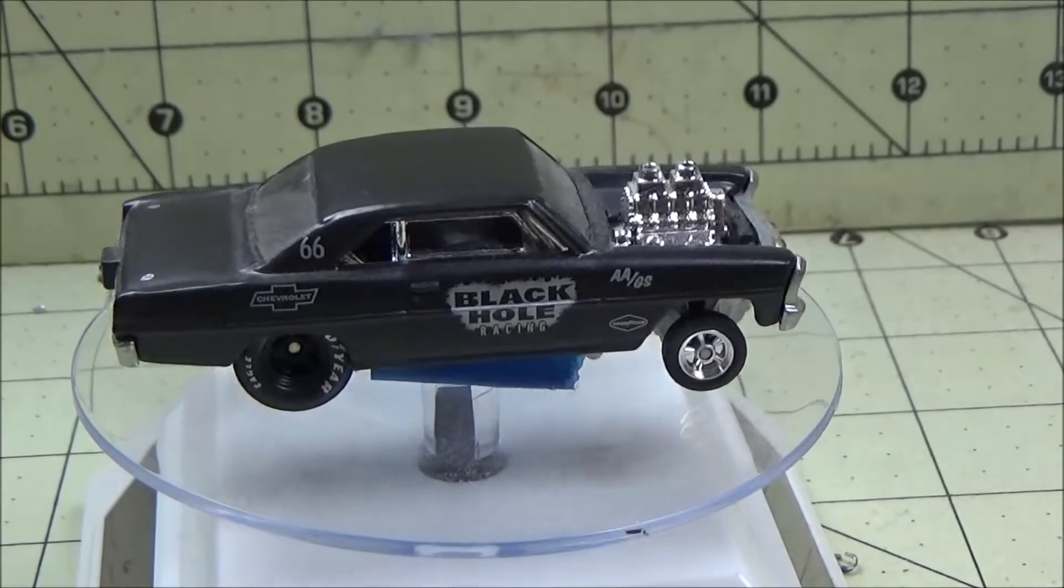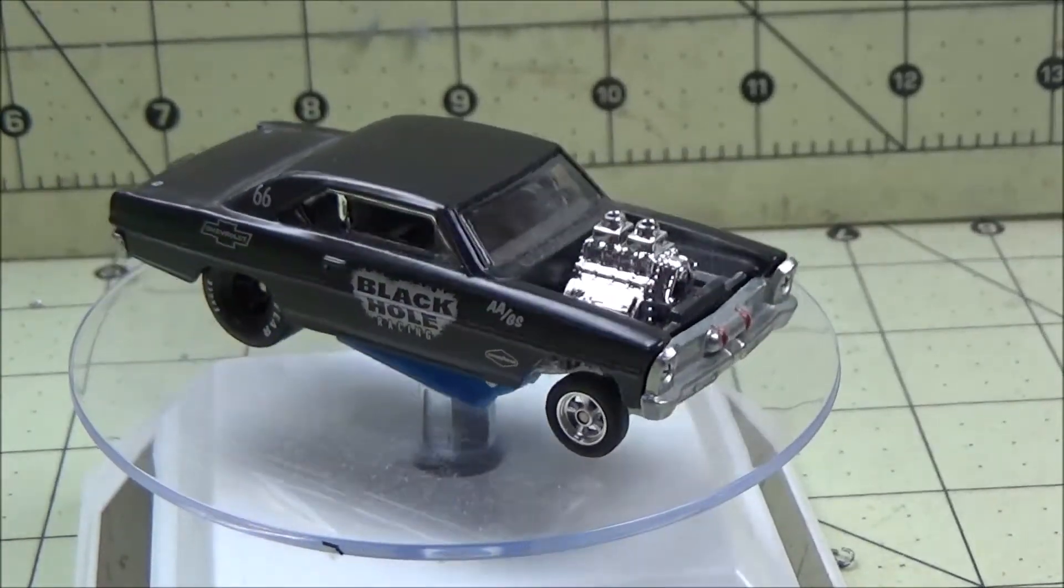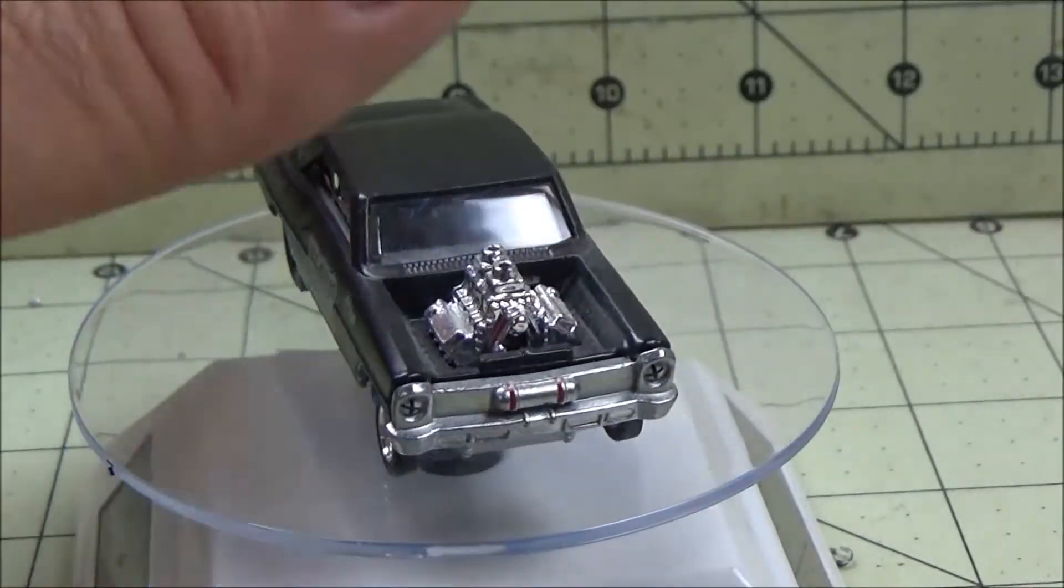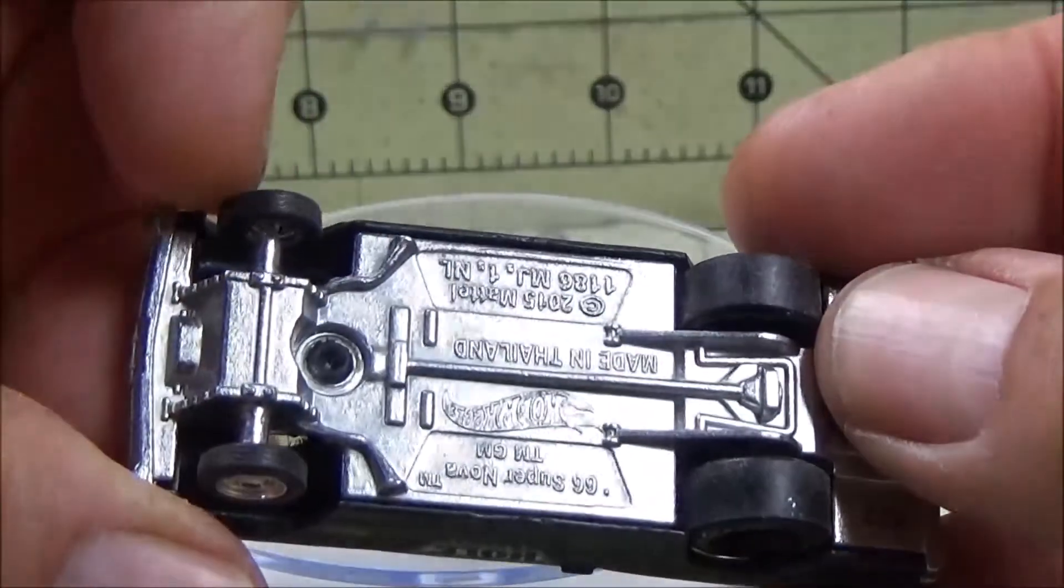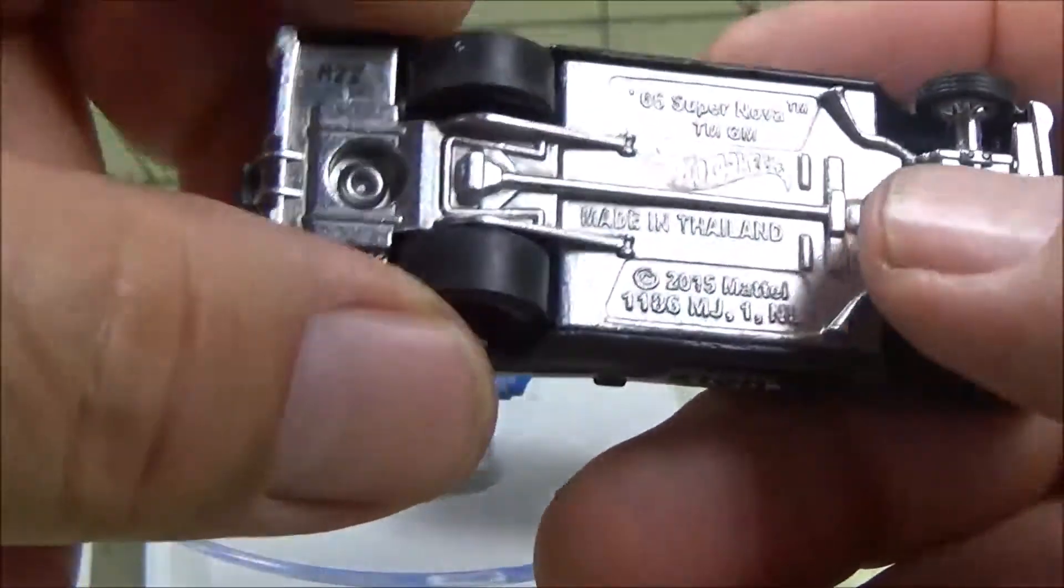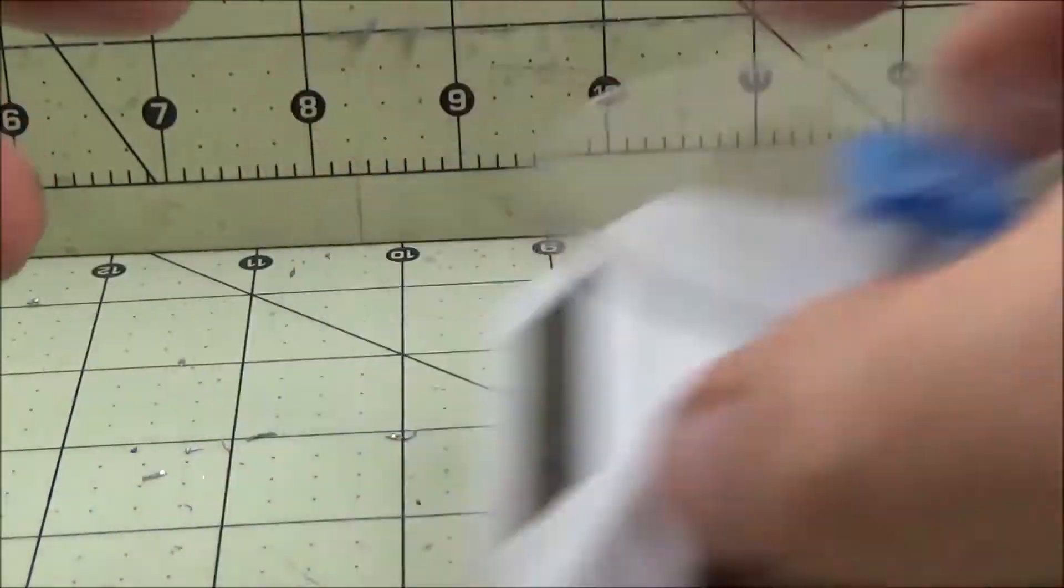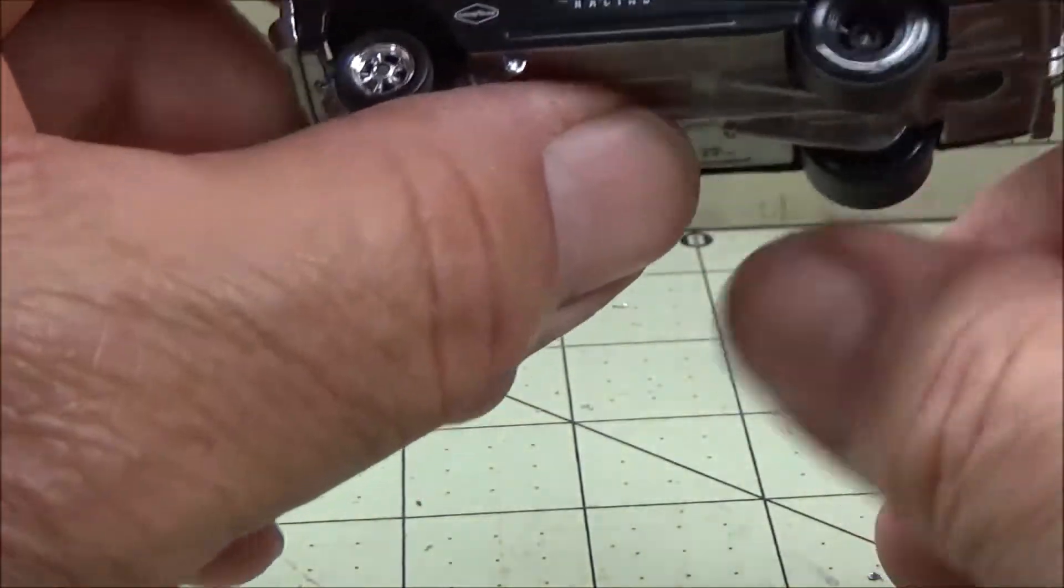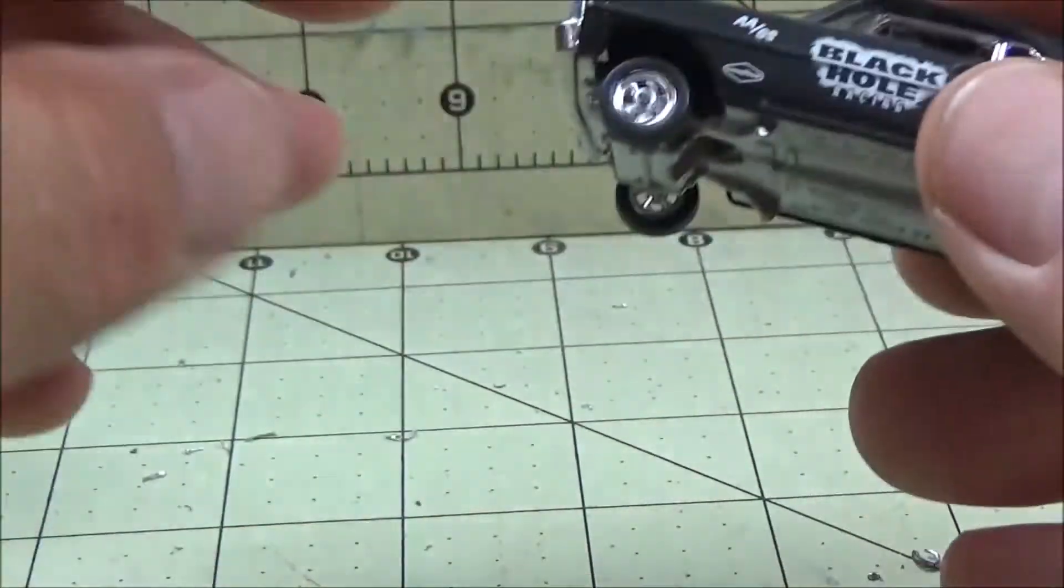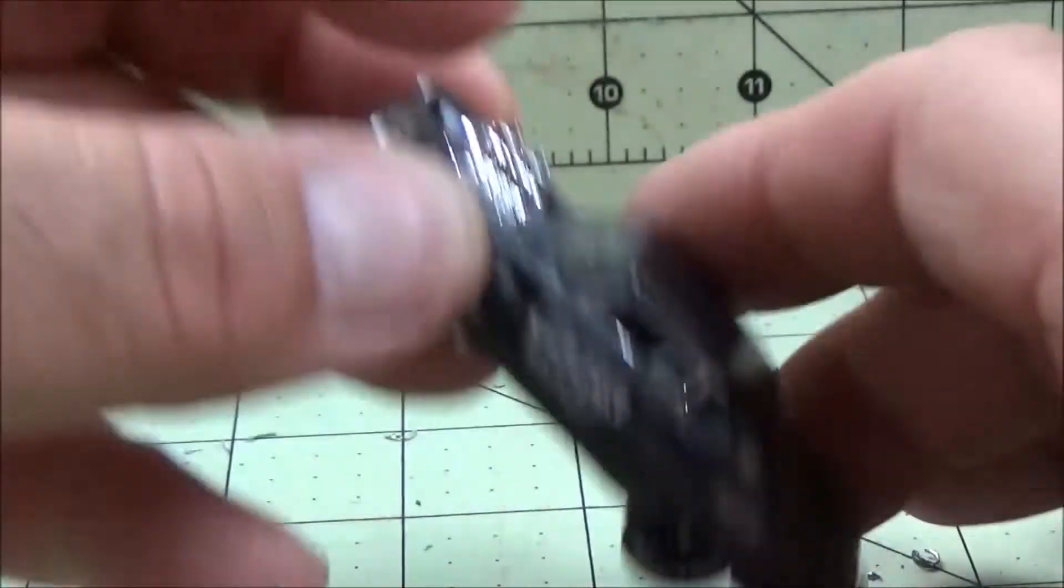The next car in the game night series is going to be the Black Hole Gasser. This is the '66 Supernova. I haven't drilled this one out yet. I like the wheels on it, I think it would work out perfect for what I'm going to do with it.